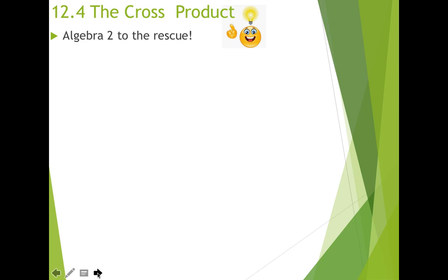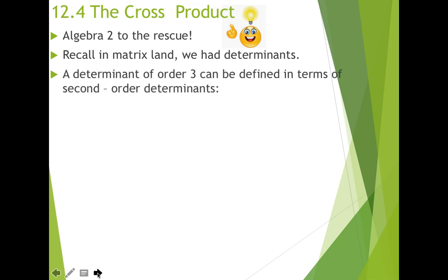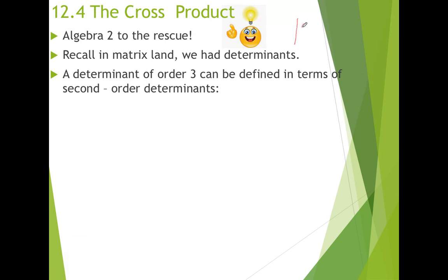So calculating the cross product, we're going to use some algebra two to the rescue. In algebra two, you should have studied matrices and done determinants — hopefully your teacher made you do some two-by-two and three-by-two determinants by hand. The second-order determinants: how to find the determinant of a two-by-two matrix. If you have a two-by-two matrix A, B, C, D, the determinant — which also looks like absolute value bars — is the difference of some products: the product of the main diagonal minus the product of the minor diagonal.